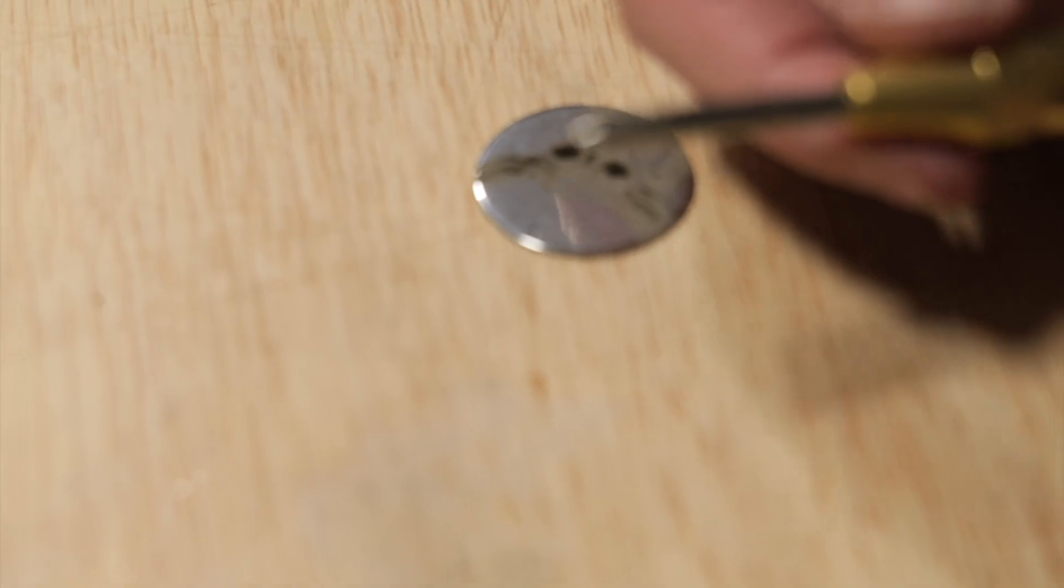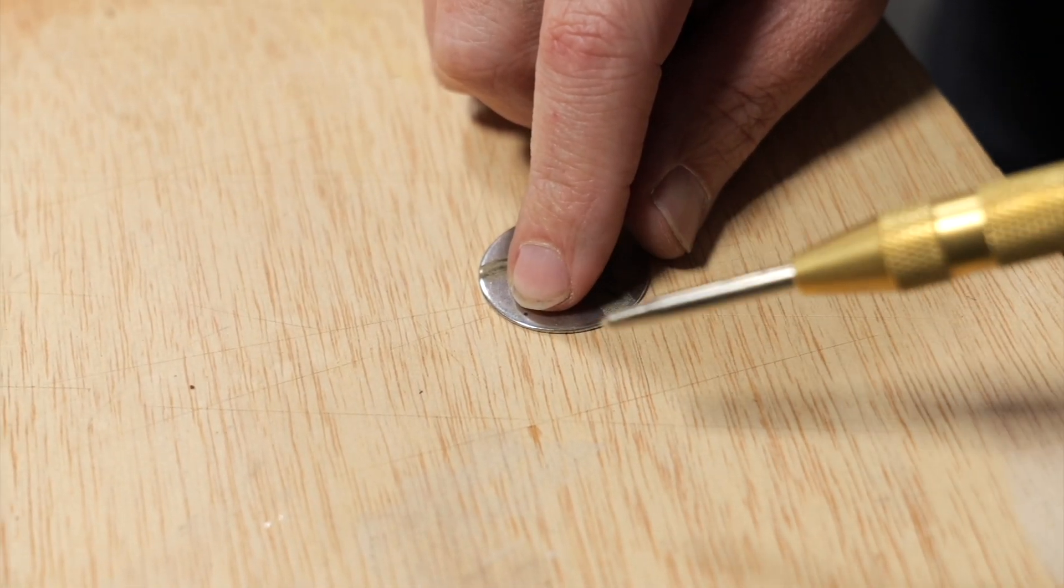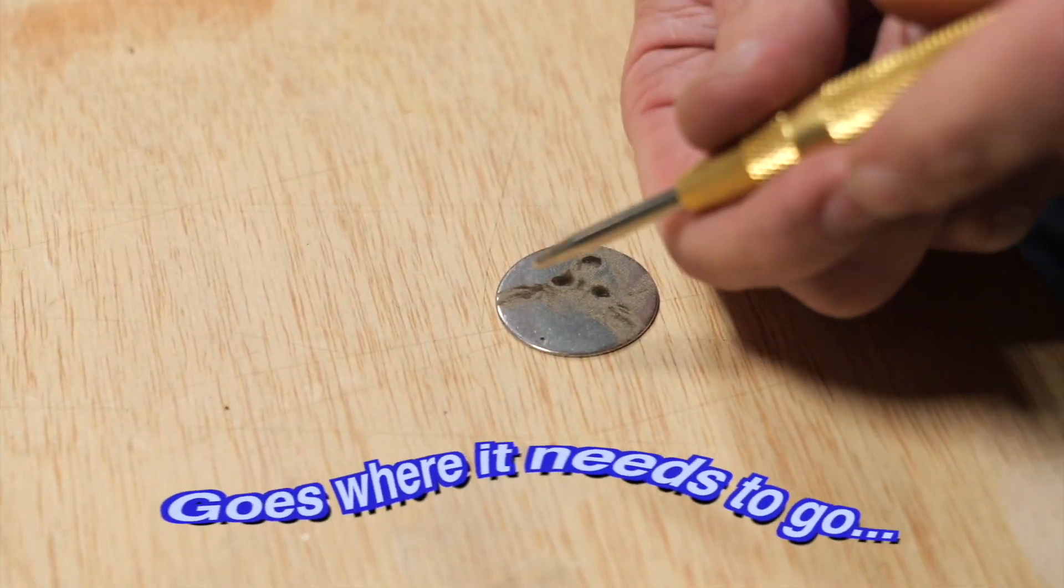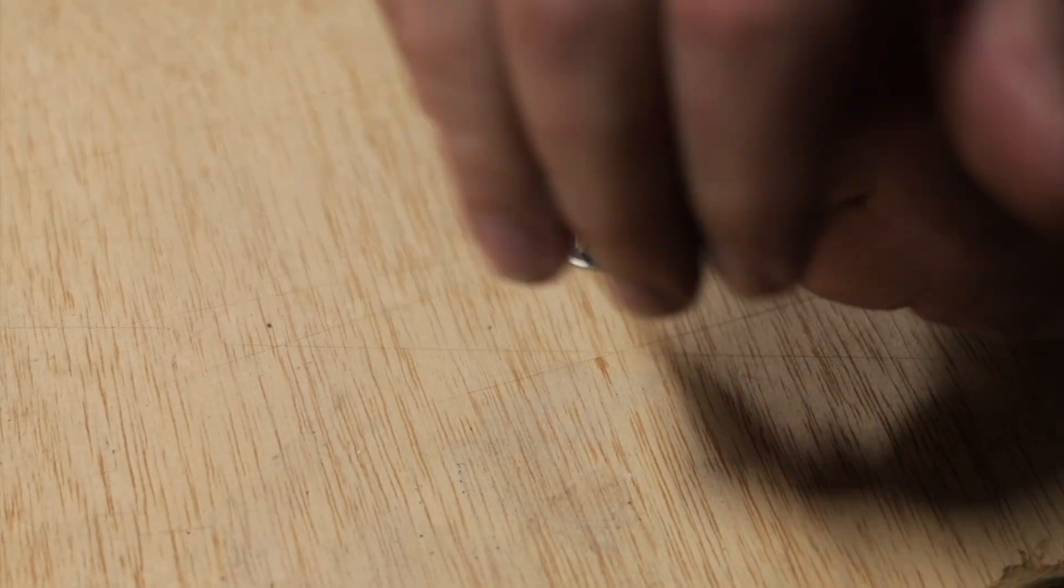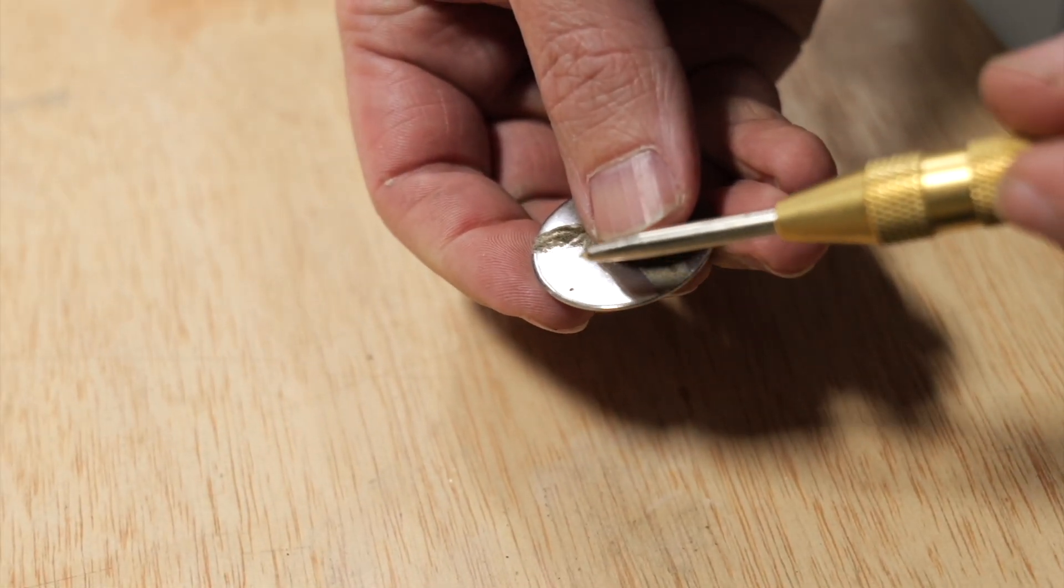Okay, so we have our mark there. And I'm going to use this little punch here to kind of put a little dent in there so that the drill bit kind of goes where it needs to go. It doesn't wander. Put that there. And now I got a little dent there that the drill bit can go into.